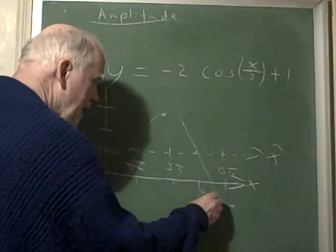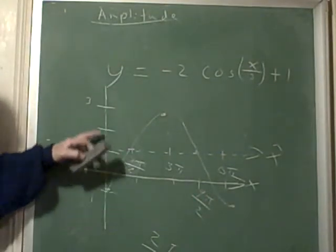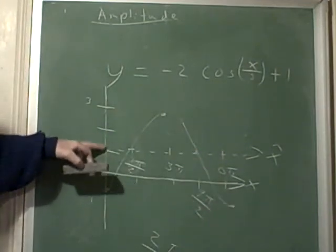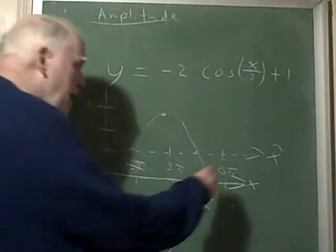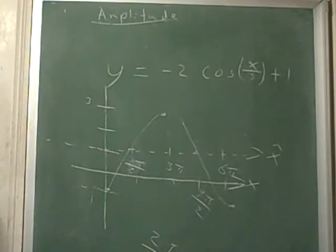And that's negative 2. Notice it goes up 2 and down 2 from when it starts on 1. It goes up to 3 and down to negative 1. It's tipped upside down and it has a new period of 6 pi. There's the cosine, there's the basic wave of the cosine.